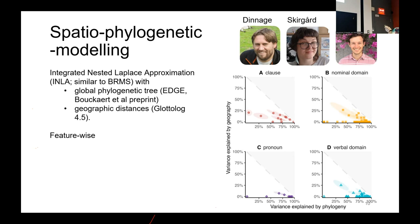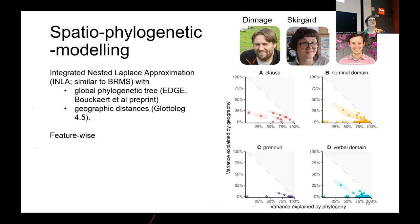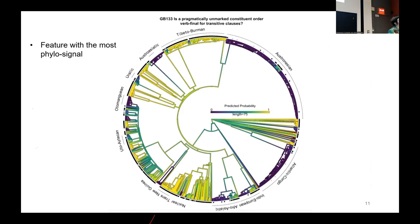When we do that feature-wise, we get plots where grammar features are divided into different domains: clausal, nominal, pronouns, and verbal domain. The x-axis shows how much variance for a feature is explained by the phylogenetic matrix and the y-axis by the spatial matrix. Most features cluster in the lower-right quadrant, meaning they're mostly explained by phylogeny. So for GrammBank features, the tree explains the distribution more than space does.